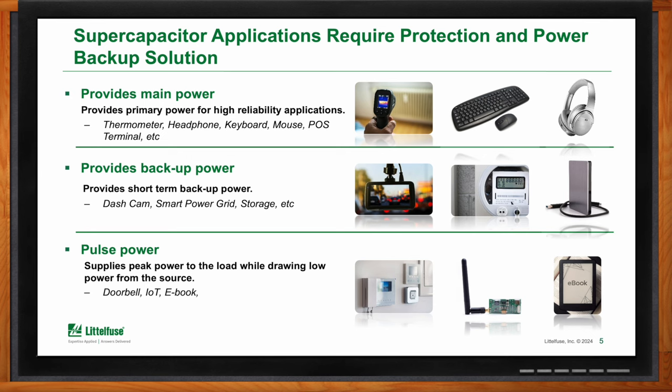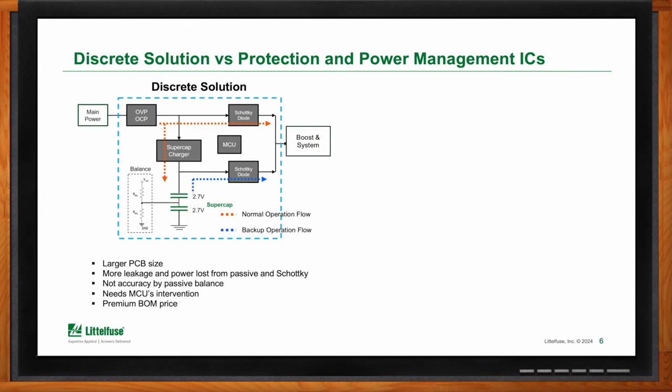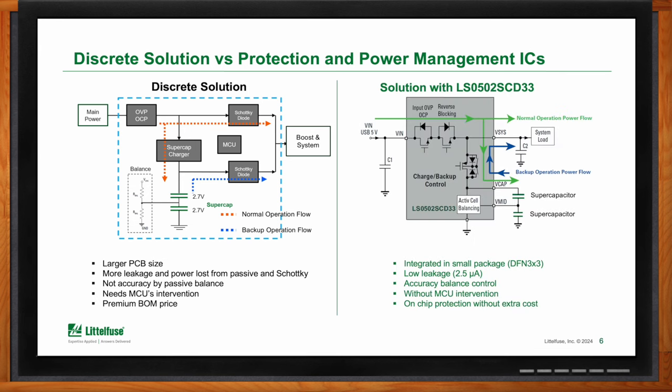How do protection and power management IC solutions compare with discrete solutions? If we were to implement all the functionality of a charge controller and protection circuits discretely, you'd generally have 10 to 15 discrete components — power switches, logic, and passives — resulting in a larger PCB size, more leakage and power loss from passive components, possible MCU intervention, and overall a higher cost solution. Ideally, having a single chip incorporating the power management and charging function in one IC is really ideal.